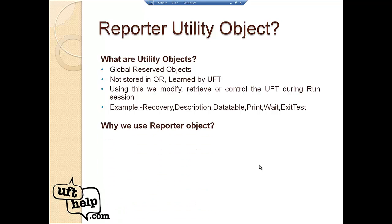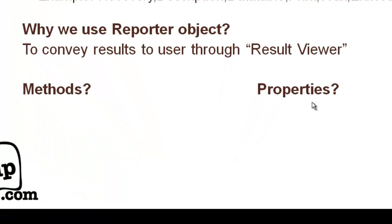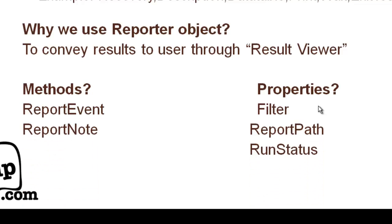Now coming back to the reporter object — we use it to convey results to the user using the result viewer. The methods and properties available in the reporter object are: the most prominent method is 'report event,' which is used frequently in practical scenarios. On the properties side, we have 'filter,' 'report path,' and 'run status.' There is also one more method: 'report node.' So we have two methods and three properties in our reporter utility object.